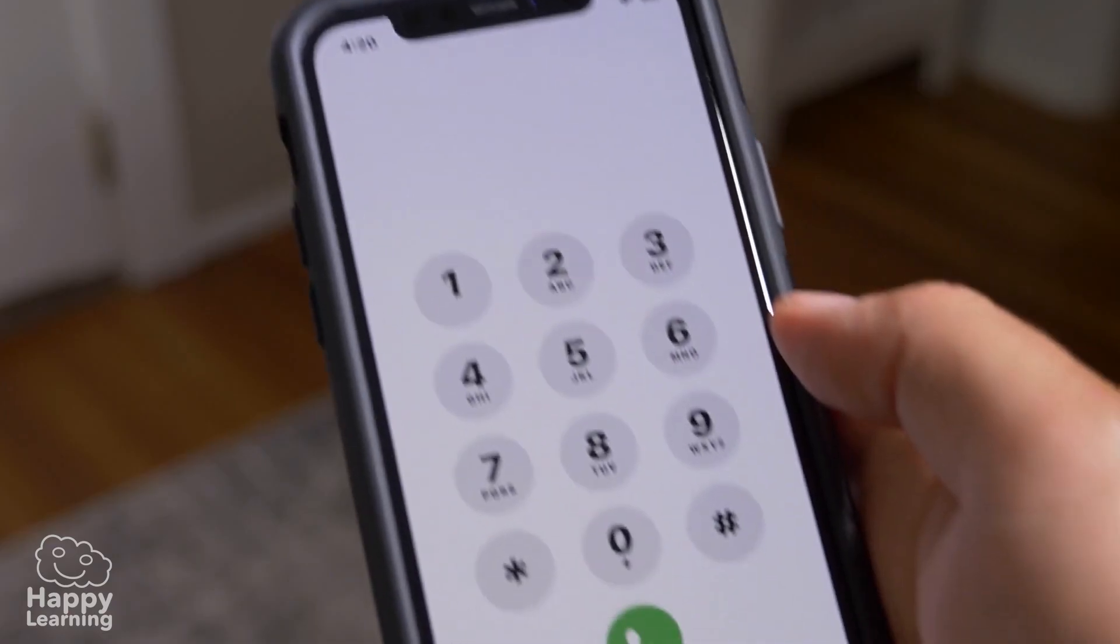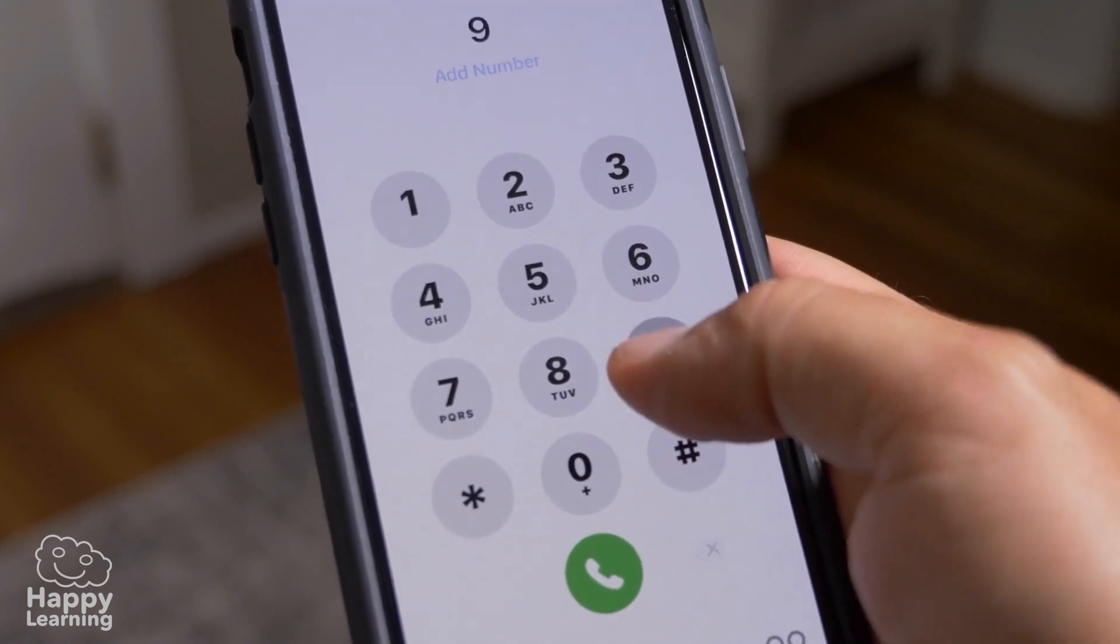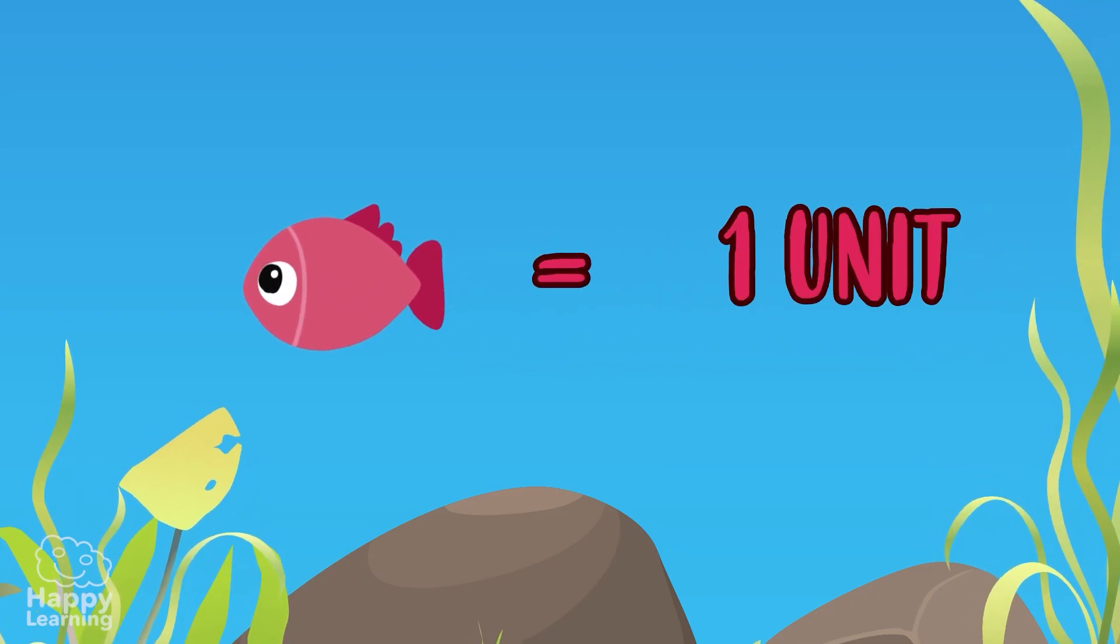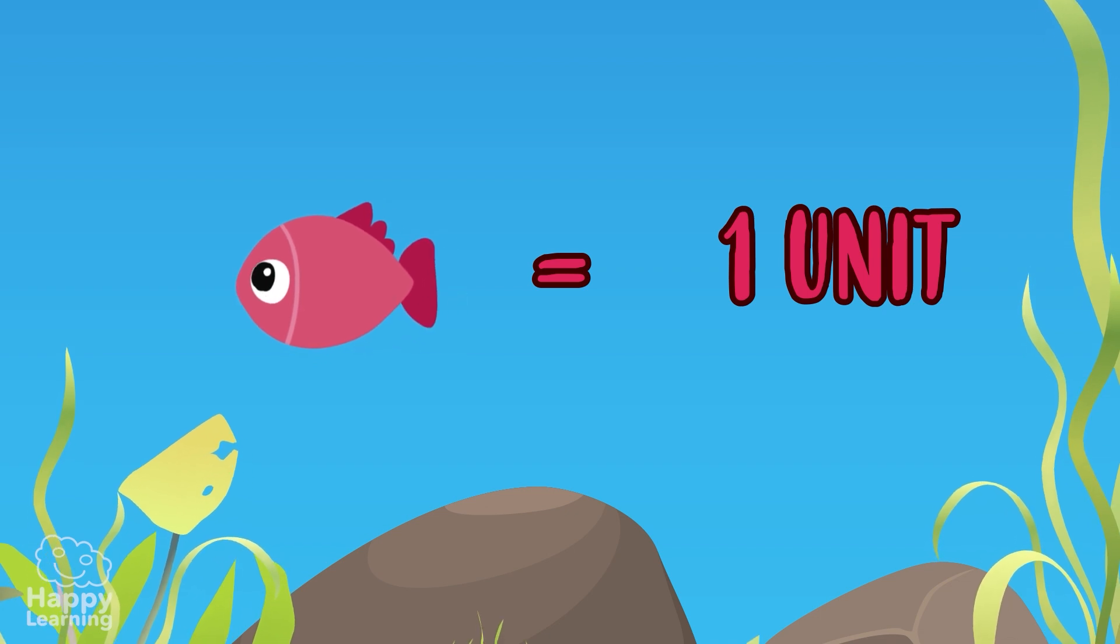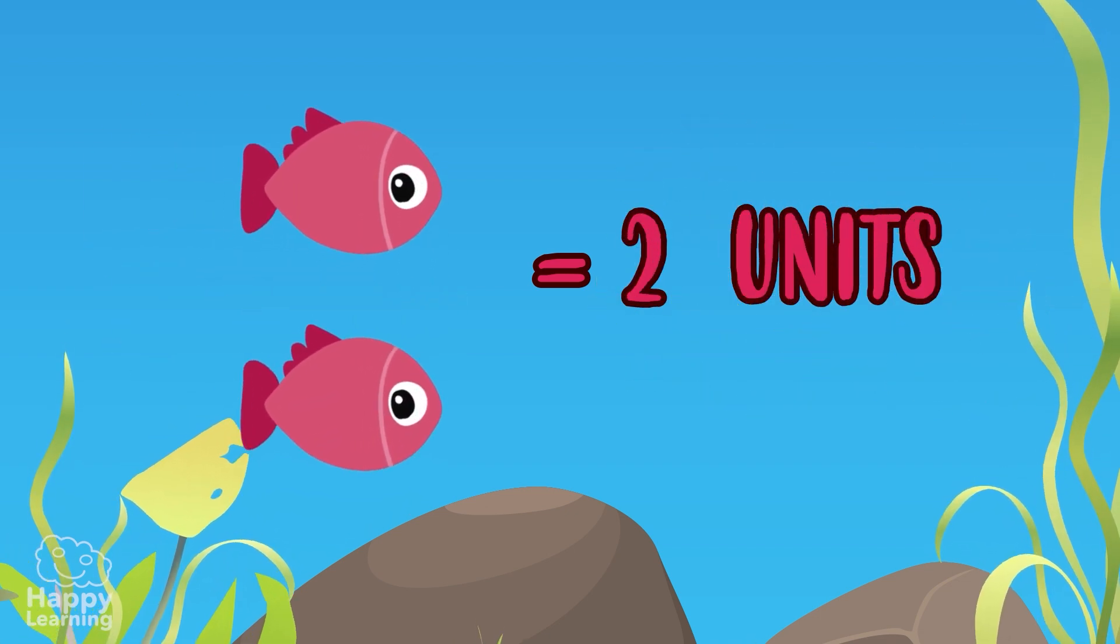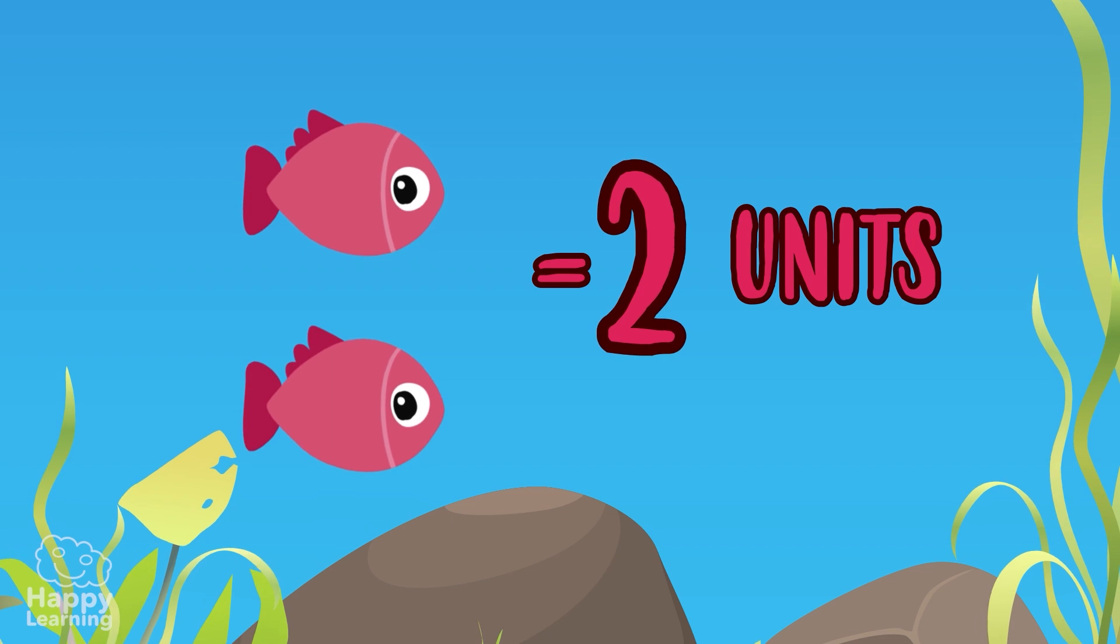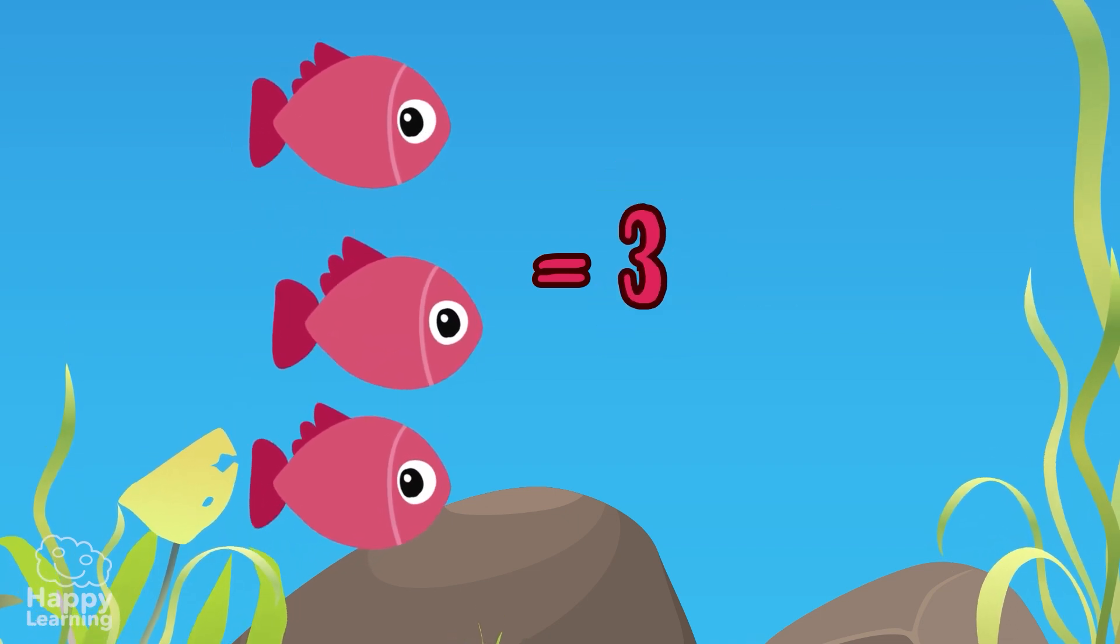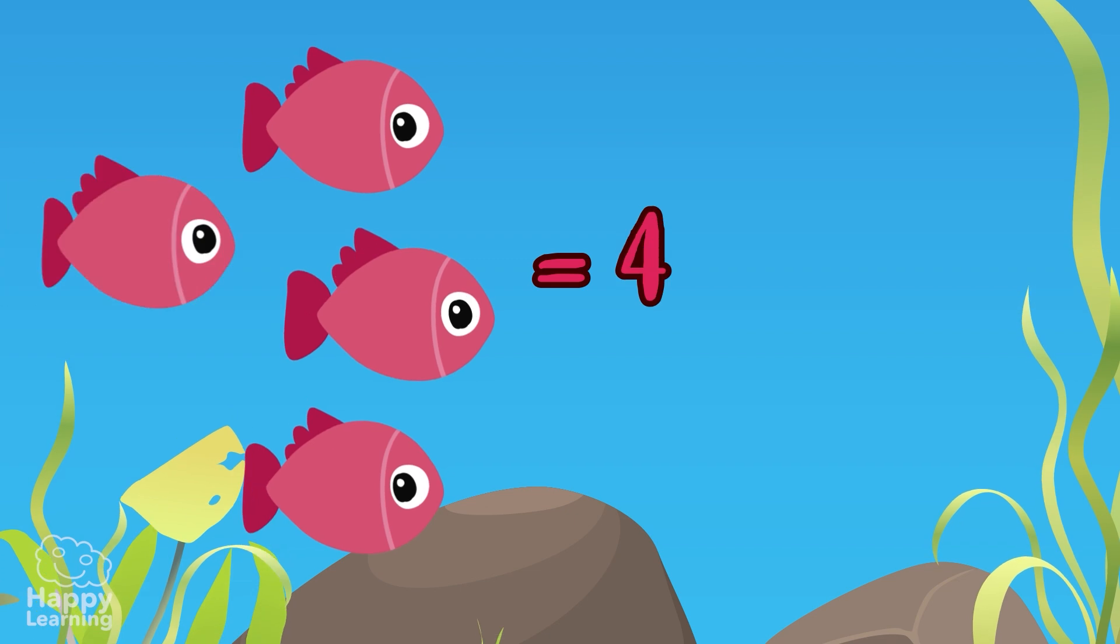The units are represented by single digit numbers. One fish is equal to one unit. So, if we have two units, we represent them with the number two. Three units with the number three, and so on, up until the number nine.